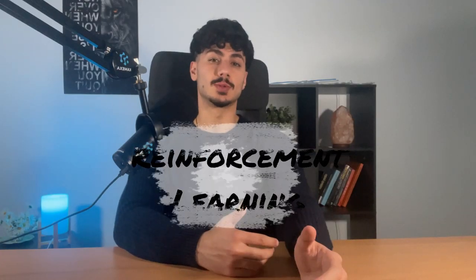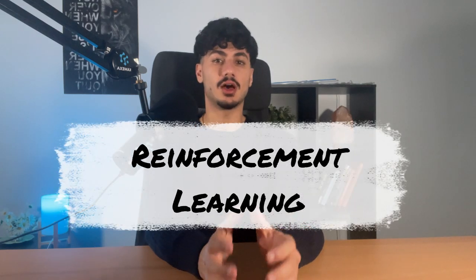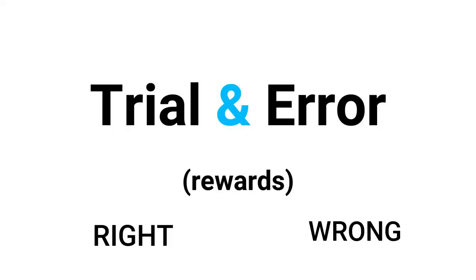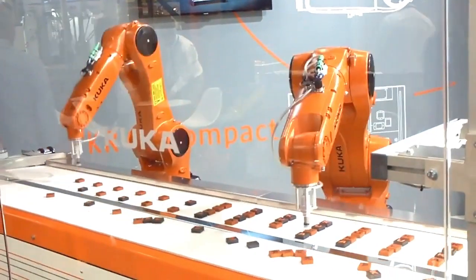Another technique is called reinforcement learning. In this technique, the AI is like a student learning through a game of trial and error, but with rewards. The AI actually gets points for making the right predictions but loses points for making mistakes. Over time, it learns the best strategy to win the game and maximize its points. This is actually the kind of learning that's used to train robots.